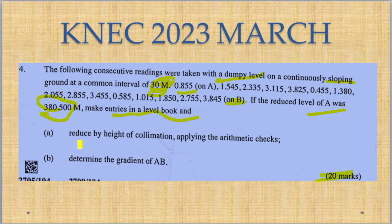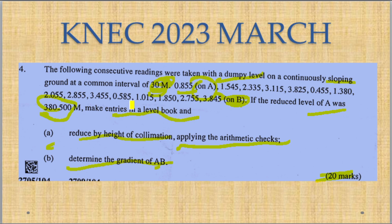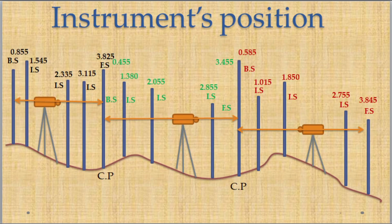If the reduced level at A was 380.5 meters, make entries on a leveling book and reduce by height of collimation, apply the arithmetic check, and determine the gradient from A to B. Total of 20 marks.